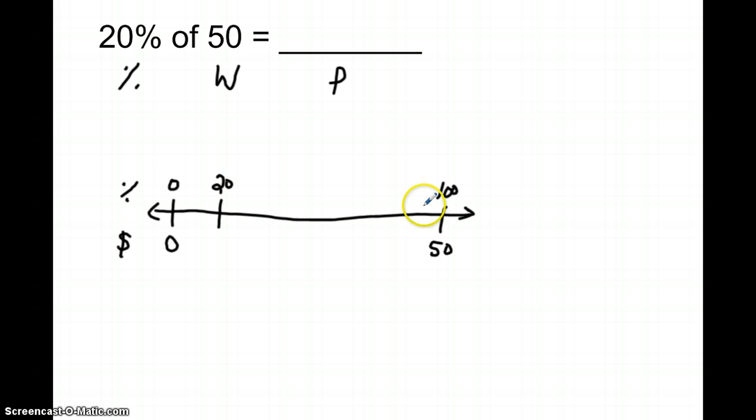I'm going to work to 20%. Some students might know that 100 divided by 5 makes 20, so 50 divided by 5 makes 10, and that would be your answer.